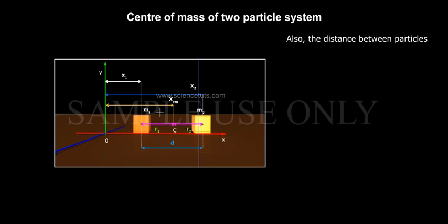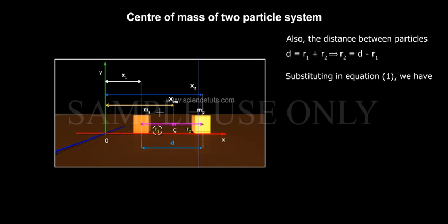Also, the distance between particles D equals R1 plus R2, that implies R2 equals D minus R1. Substituting in equation 1, we have M1 R1 equals M2 times (D minus R1). That implies R1 equals M2 D by (M1 plus M2), equation 3.